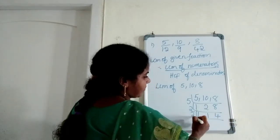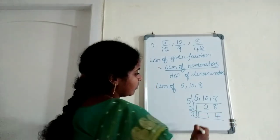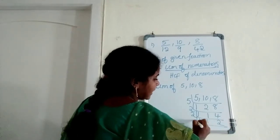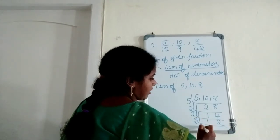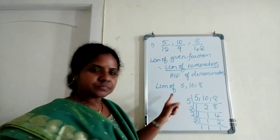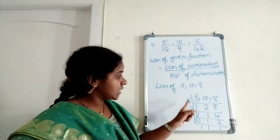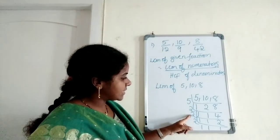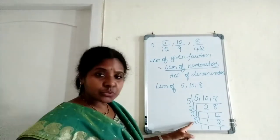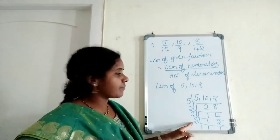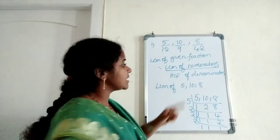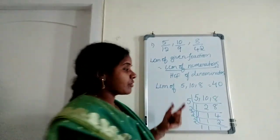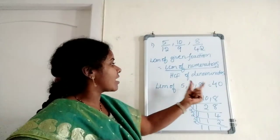Using the prime factorization method, we work through the divisions. Multiplying the factors together: 5 × 2 × 2 × 2 = 40. So the LCM of the numerators is 40.